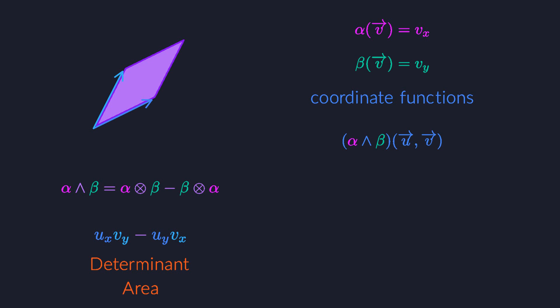This result generalizes to higher dimensions as well. Whenever you wedge a number of coordinate functions together, you get a new function that measures the area or volume or hypervolume spanned between its input vectors. Isn't that incredible?